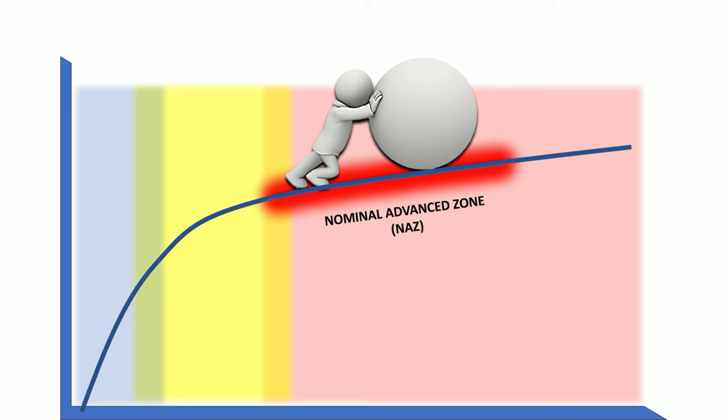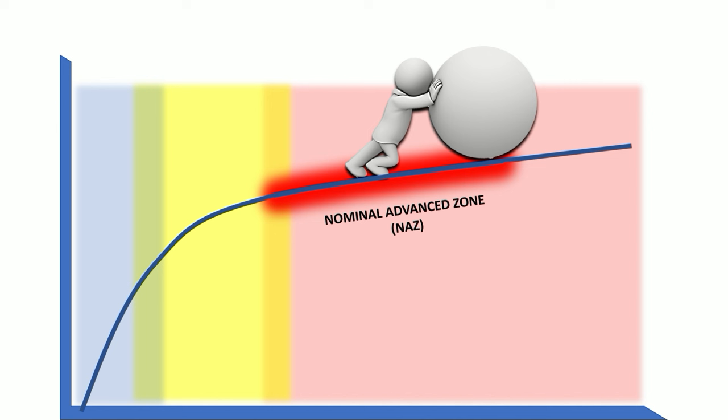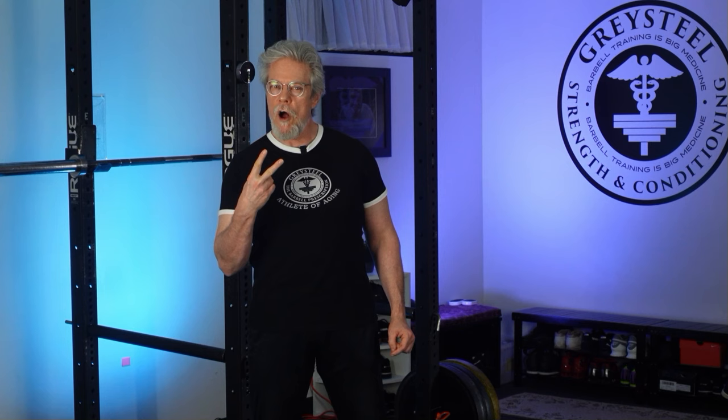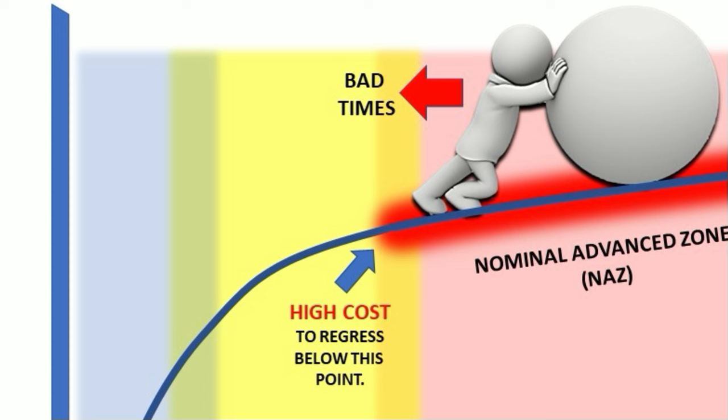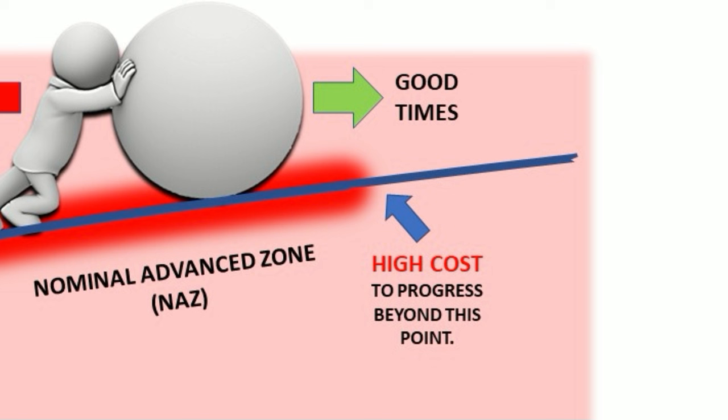We're talking about a protracted linear progression and intermediate programming to claw his way back up. At the right border of the NAS, things are going well, and the athlete is confronted by the opportunity to extend his performance — to extend his NAS beyond its current reach. Two borders, two sets of costs. At the left end, the athlete should make any commitments his health, capacities, and situation will allow to avoid falling off the NAS entirely.